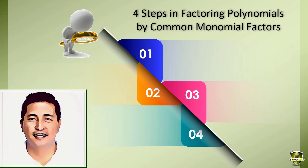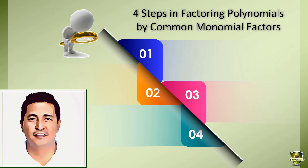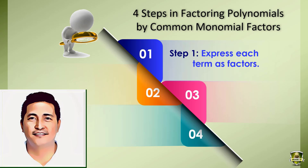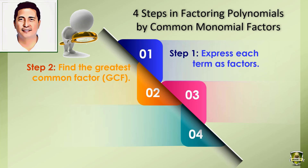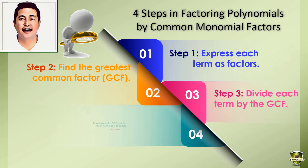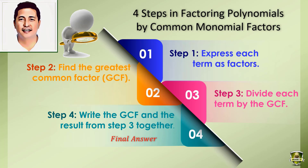In factoring, it is very useful if we have a certain pattern to follow, just to guide us on what to do first, and then the rest of the process, until we come up with the factored form. Basically we could use the four-step process in factoring polynomials using common monomial factors. First, express each term in the polynomial as factors. Second, find the greatest common monomial factor, or the GCF. Third, divide each term of the polynomial by the GCF. And lastly, write the result from step 3 together with the GCF as an expression — that's our final answer, the factored form.